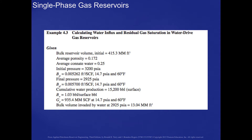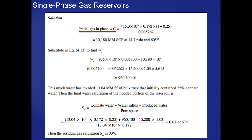Example problem 4.3 is calculating water influx and residual gas saturation in a water-drive gas reservoir. Data is given in the statement of the problem as shown in the slide. The initial gas in place is calculated from the first equation on this slide. If we substitute this gas in place into equation 4.13, we can solve for the water encroachment at this pressure.